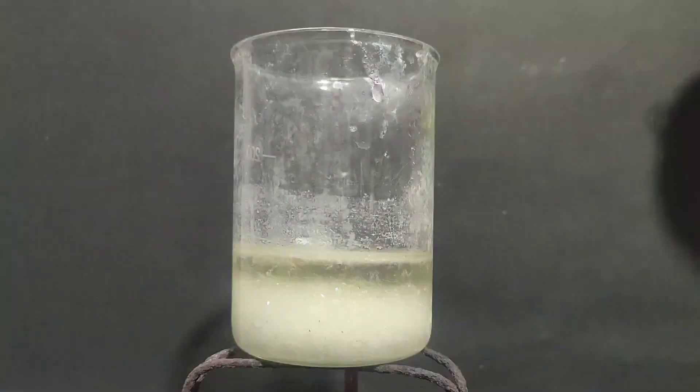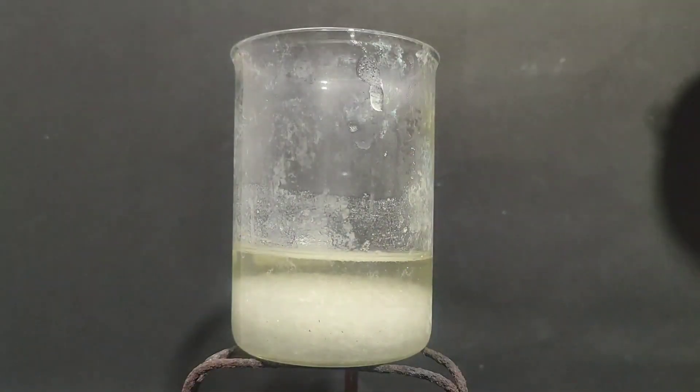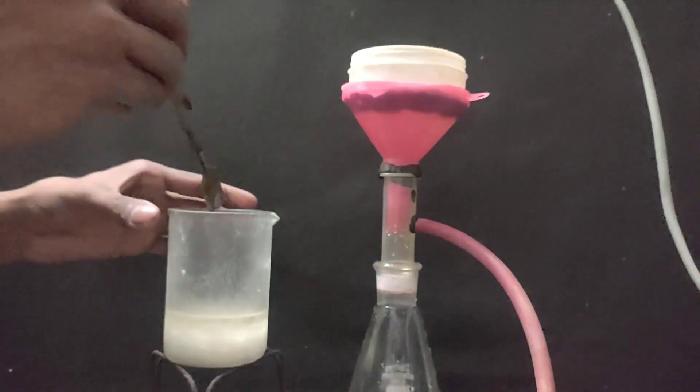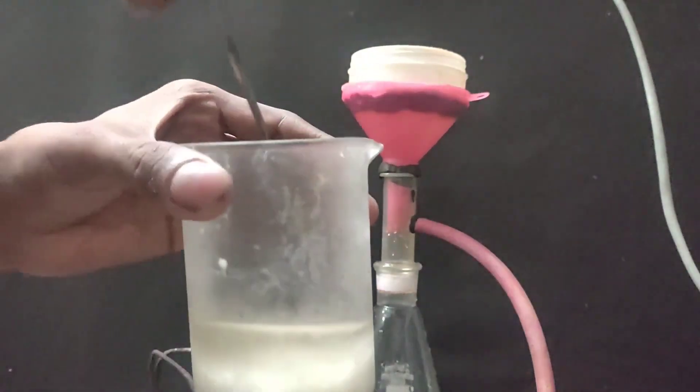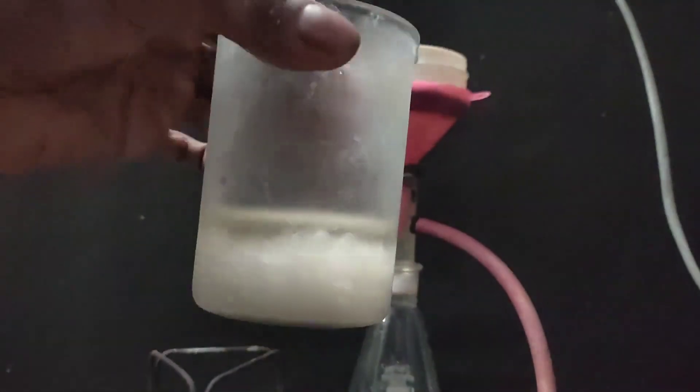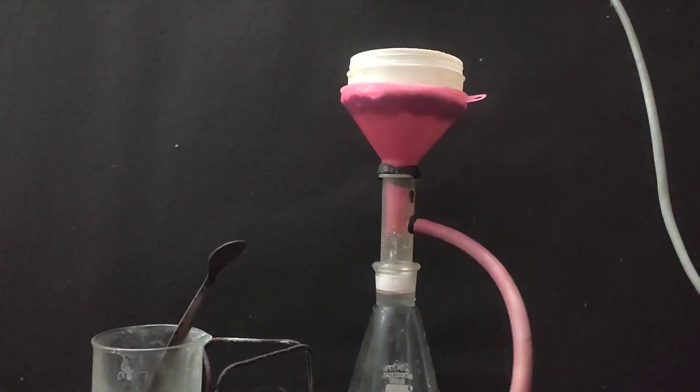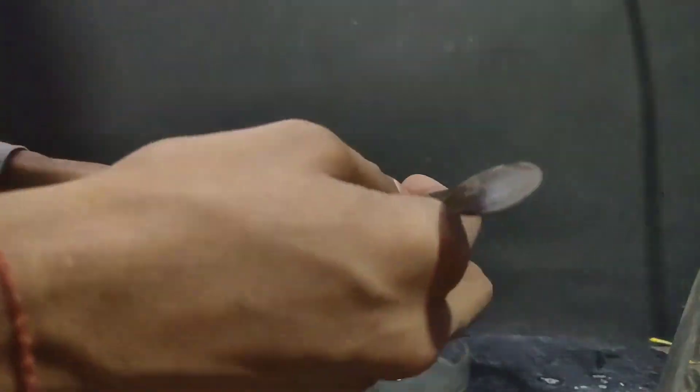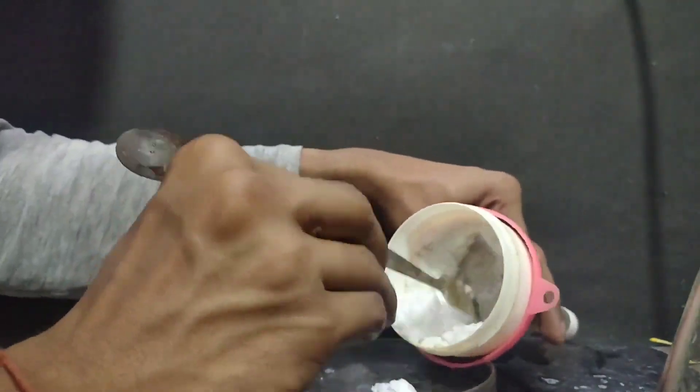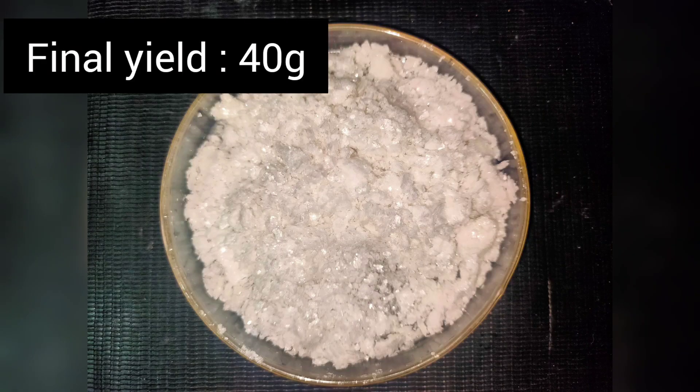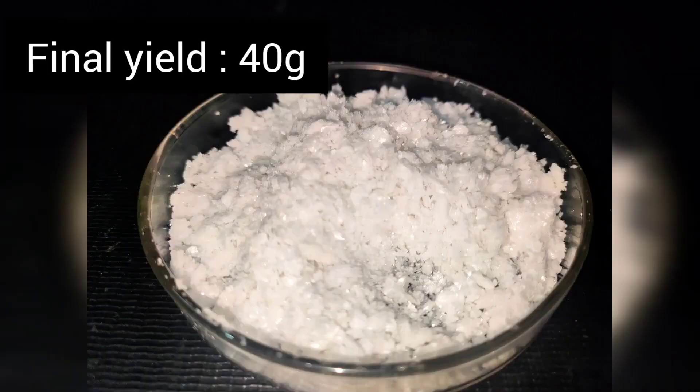Then I put the beaker in the freezer to chill till 0 degrees Celsius. The beaker was taken out of the freezer and the crystals were filtered off using my Buchner funnel. Then I took off the crystals in a petri dish and dried them in my desiccator. After drying, the yield came to about 40 grams.